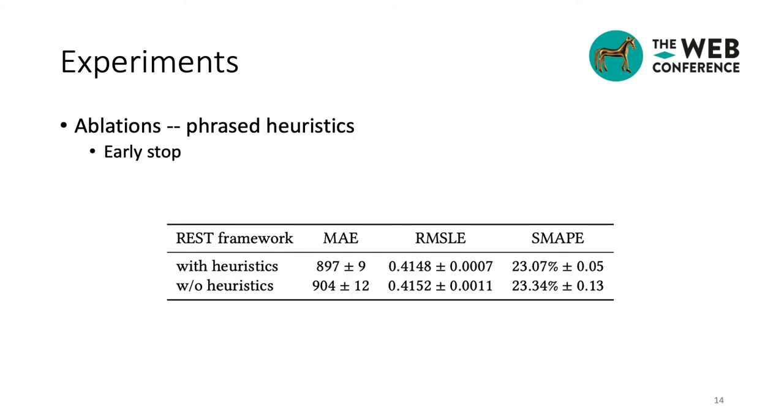To verify the effectiveness of the phased heuristics, we conduct an ablation experiment. This table shows the performance of the REST framework with the phased heuristics or not. As we can see, the REST framework with the phased heuristics predicted more accurately than that without the heuristics. However, examining the single result of the experiments, we notice that the REST framework without the phased heuristics could also get prediction accuracy as low as that with the phased heuristics. But the REST framework without the phased heuristics was more easily to get early stopped, and thus led to higher standard deviation.